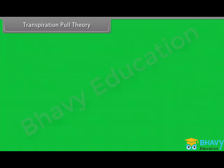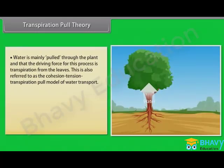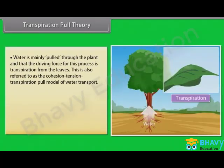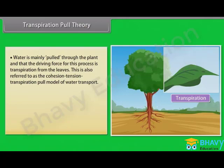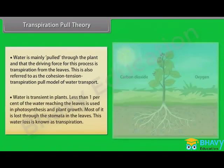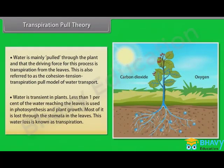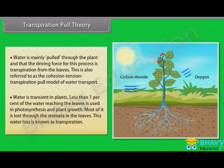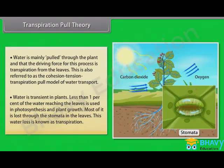Root pressure does not account for the majority of water transport; most plants meet their needs by transpiratory pull. In transpiration pull theory, most researchers agree that water is mainly pulled through the plant, and the driving force for this process is transpiration from the leaves. This is also referred to as the cohesion-tension-transpiration pull model of water transport. Water is transient in plants — less than 1% of the water reaching the leaves is used in photosynthesis and plant growth. Most of it is lost through the stomata in the leaves, and this water loss is known as transpiration.